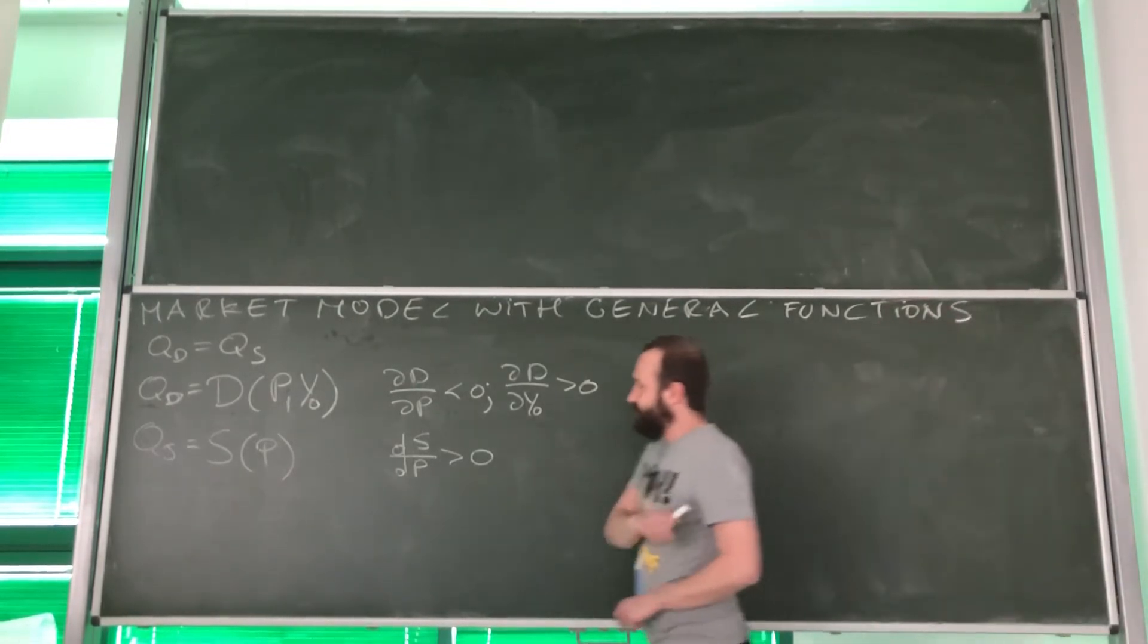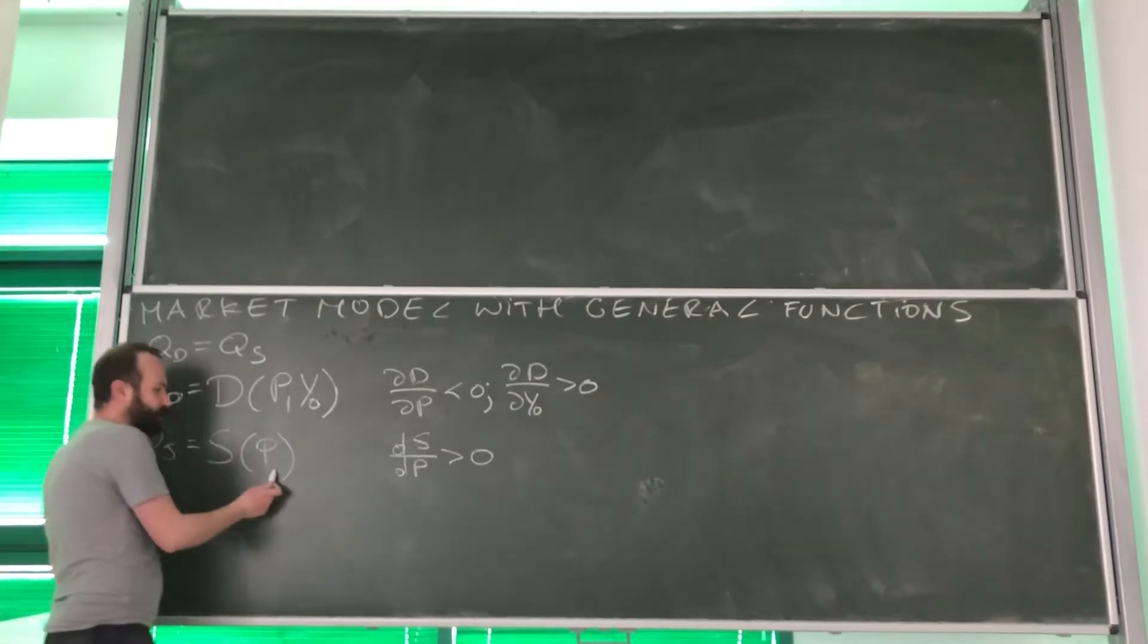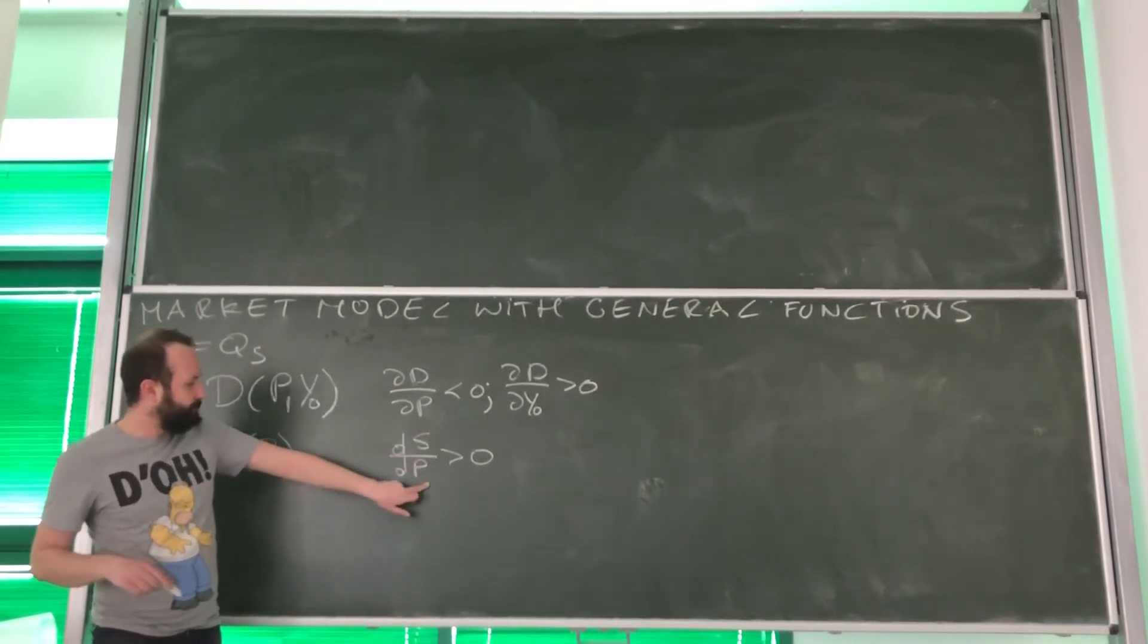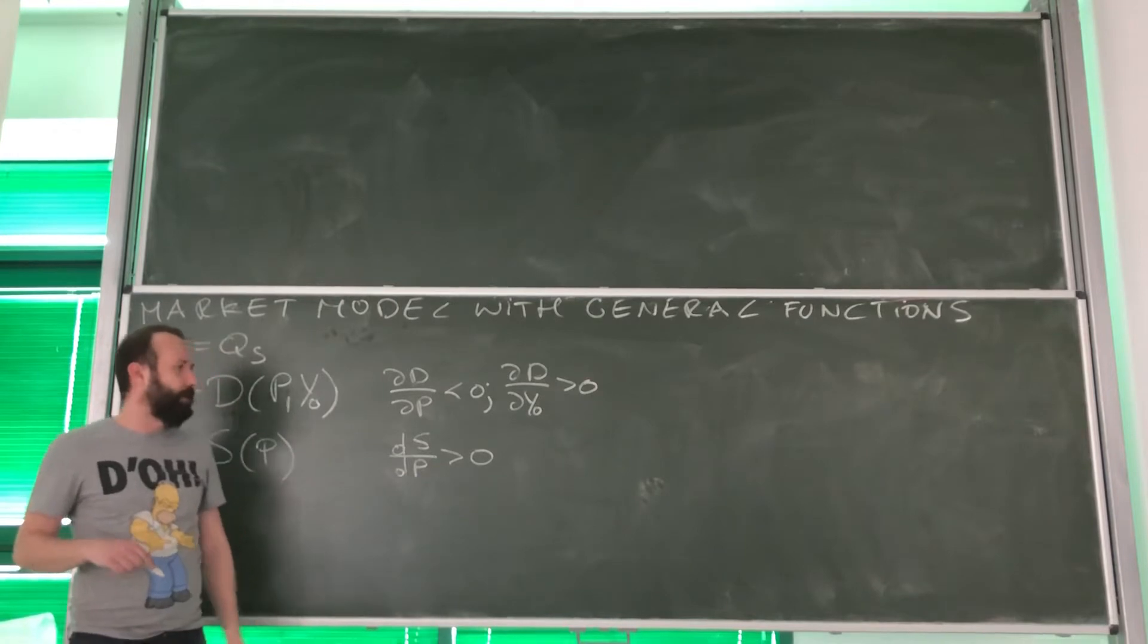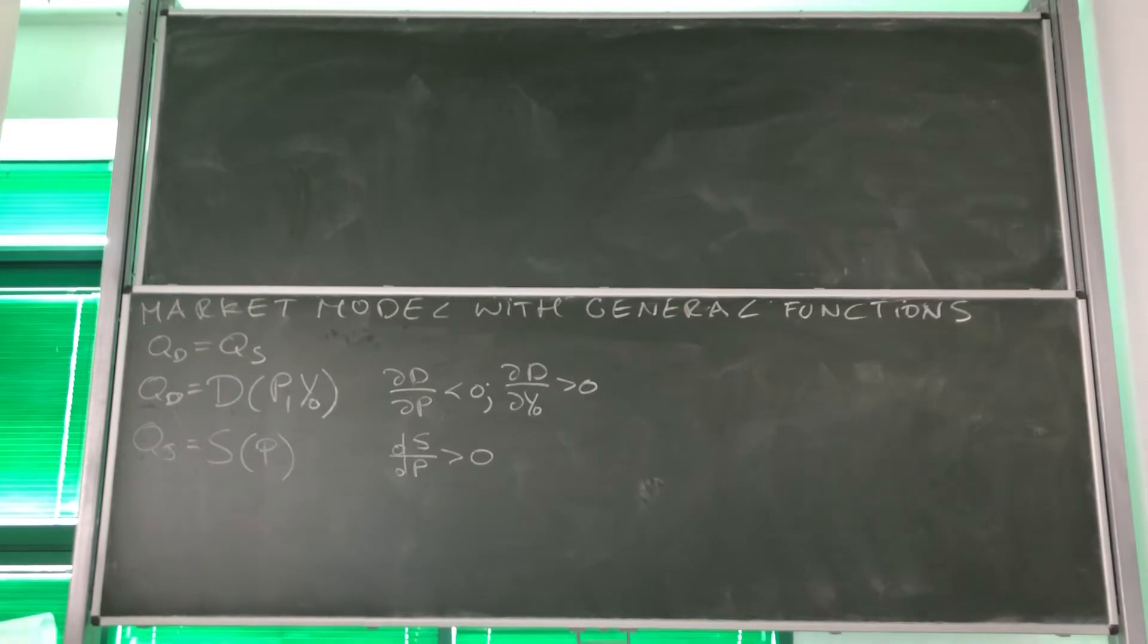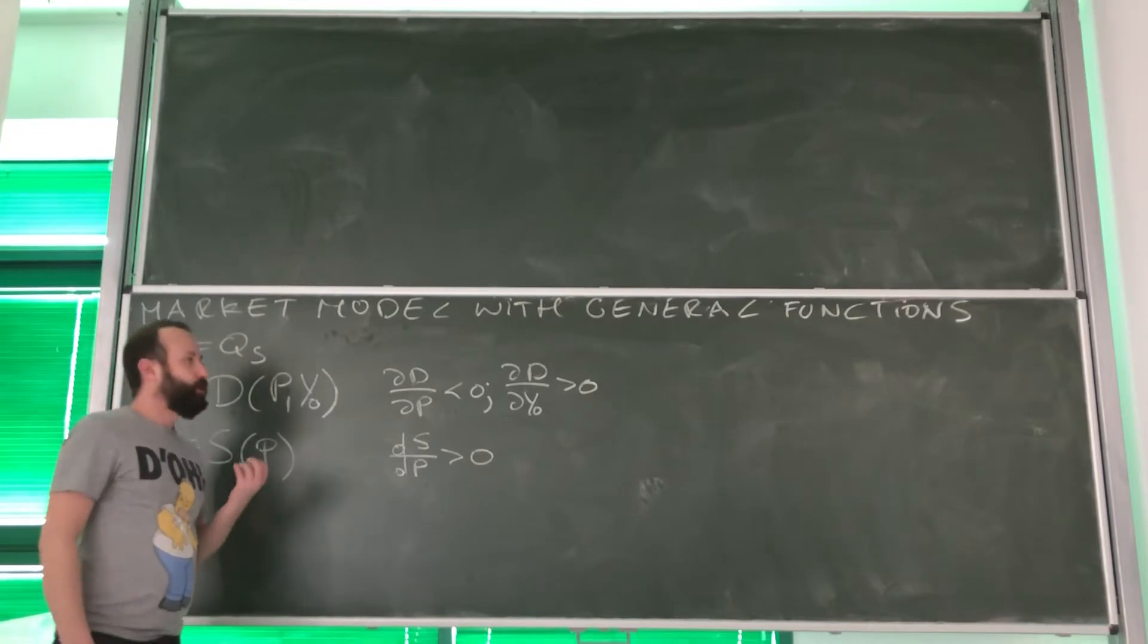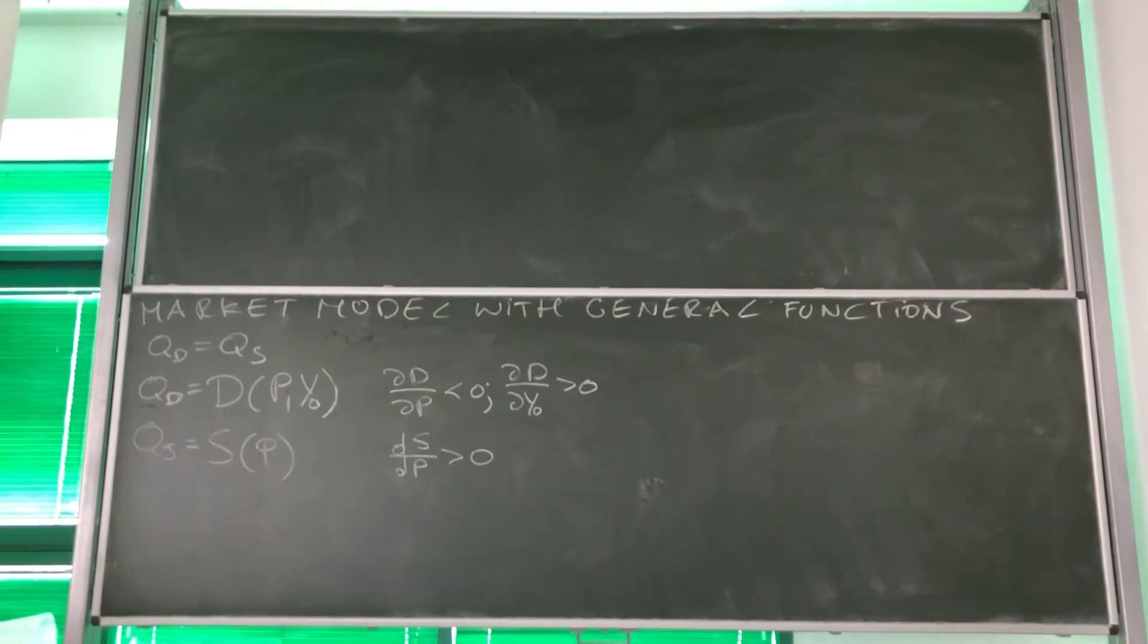And very similar information we've got about supply. Now, quantity supply, this means it's a function of one variable alone, price. And we know that the higher the price, the higher the supply and quantity supply. So look, all that information we've got over here is extremely general. We do not need to rely on a specific form of a function to have any inferences.